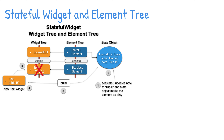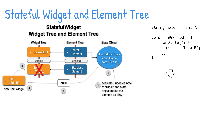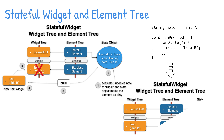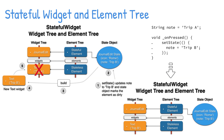The text widget is a stateless widget, and the corresponding element is a stateless element. Although the text widget has been replaced, the state is maintained — meaning it persists. State objects have a long lifespan and remain attached to the element tree as long as the new widget is the same type as the old widget. The old text widget with the trip A value is removed and replaced by the new text widget with the trip B value. Since both the old and new widgets are of the same type, the element stays on the element tree with the updated reference to the new text trip B widget.